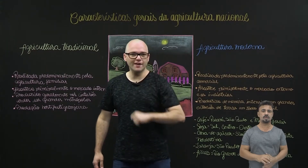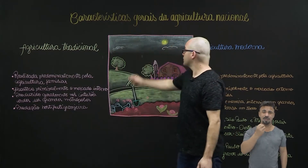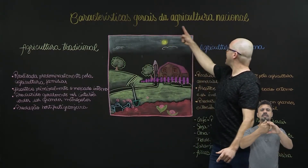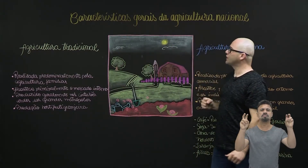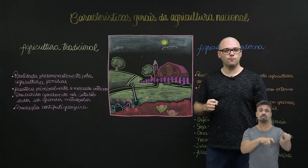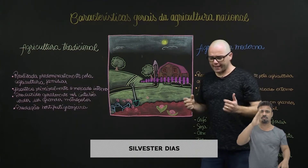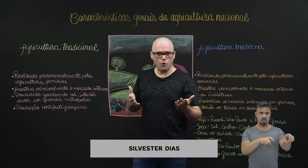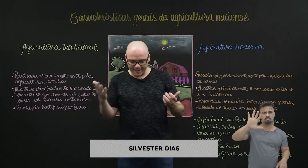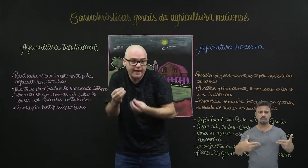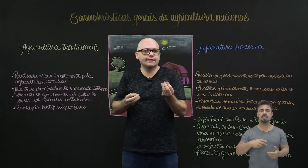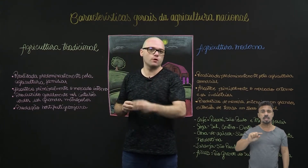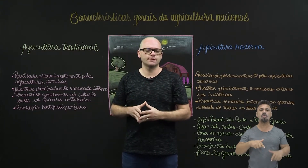Fala pessoal, tudo bem? Vamos falar sobre as características gerais da agricultura nacional. A agricultura nacional, junto com a pecuária nacional, gera cerca de 10 milhões de empregos no nosso país.